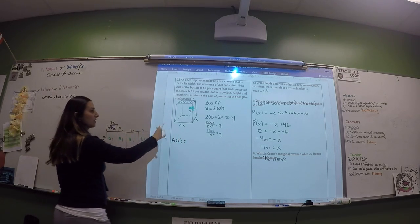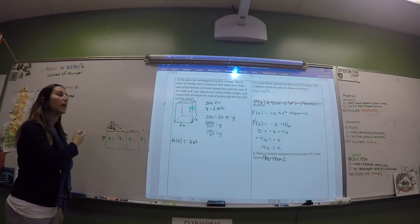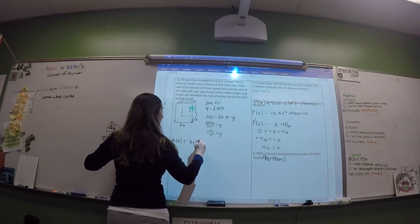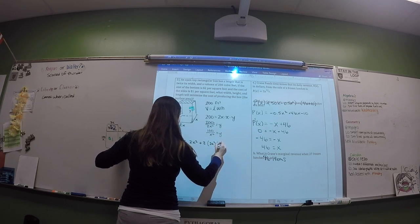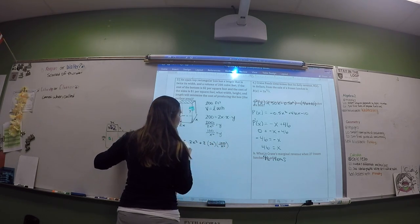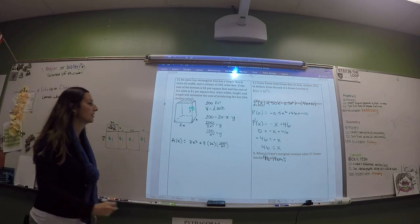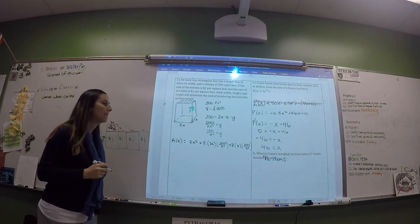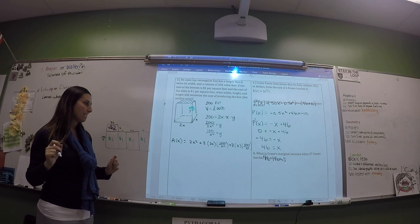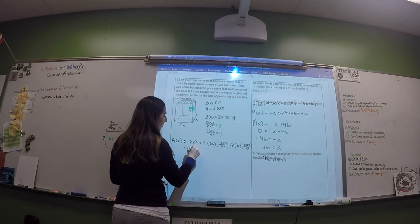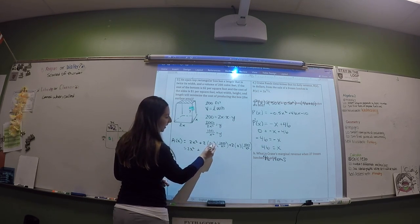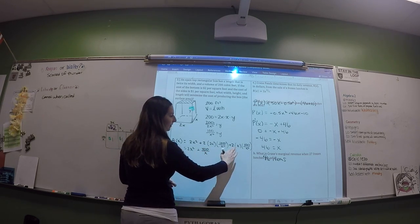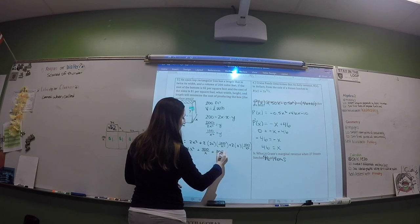The area of the base is 2X times X, which is 2X squared. Then I have 2 sides of dimensions 2X by (100/X²), and 2 sides of dimensions X by (100/X²). Simplifying: the base area is 2X squared, and each pair of sides simplifies — the X cancels to give 400/X and 200/X.